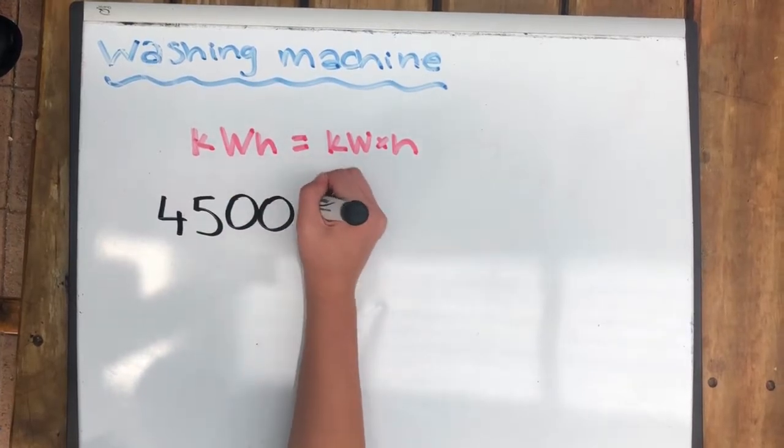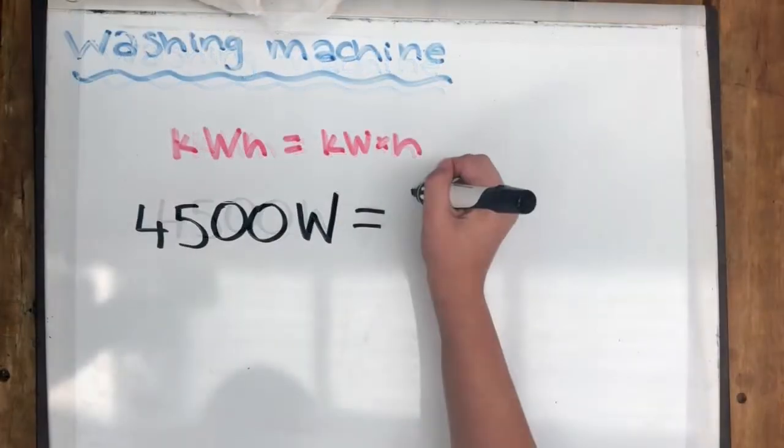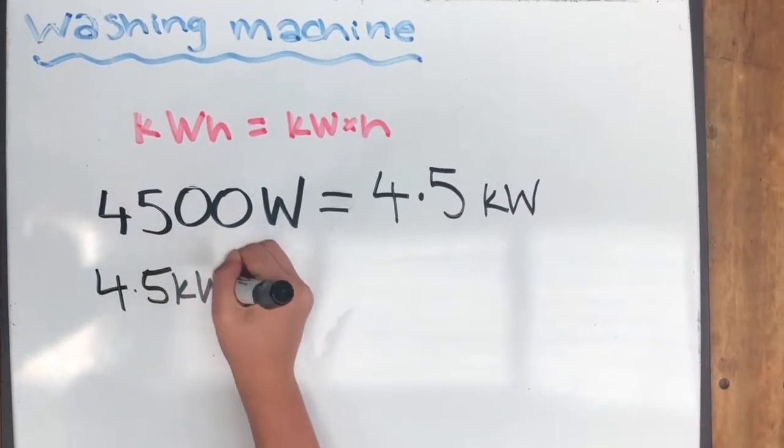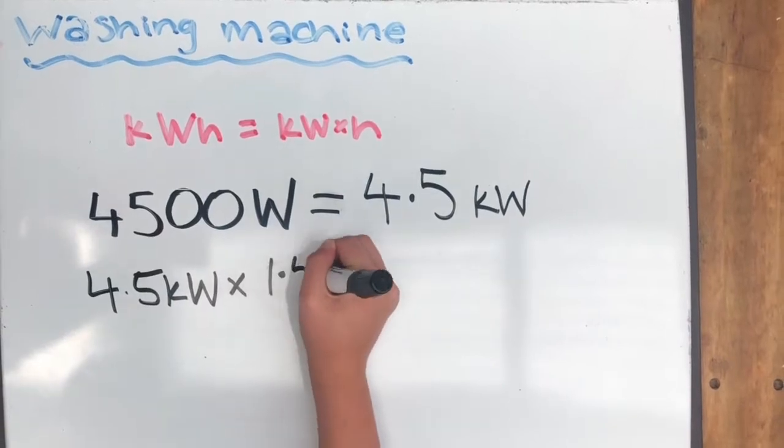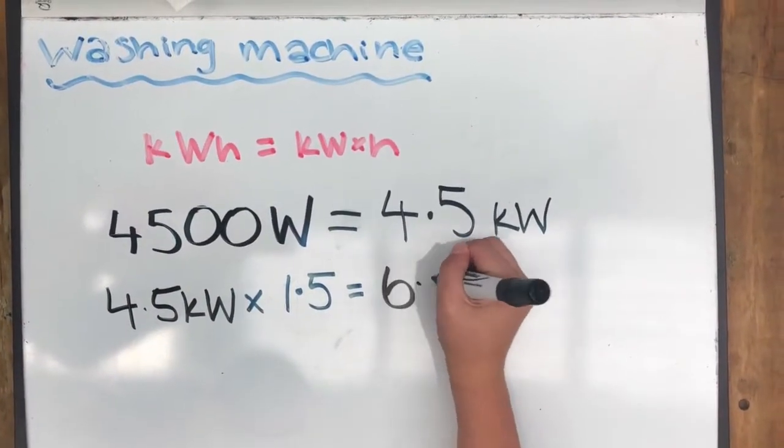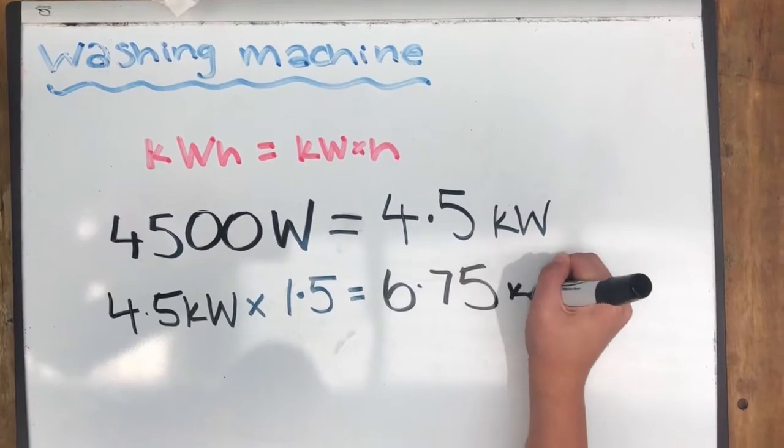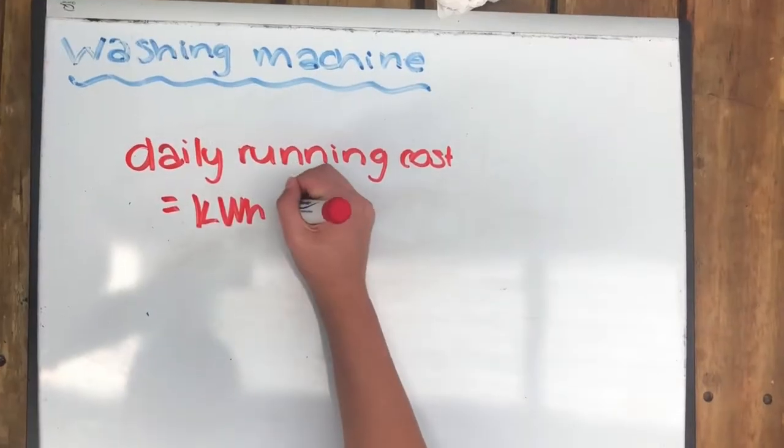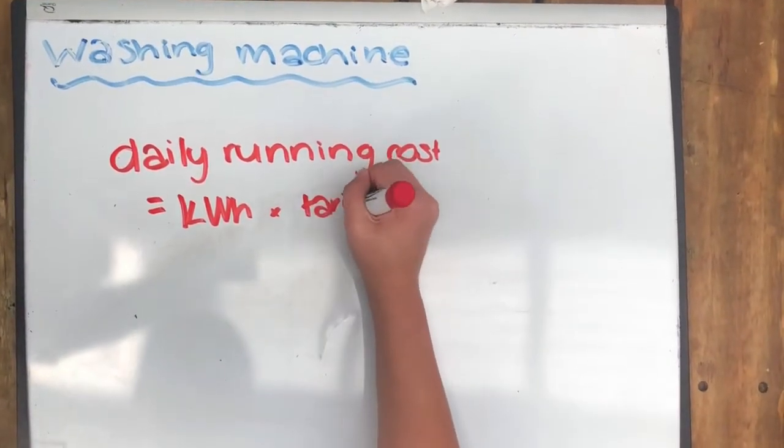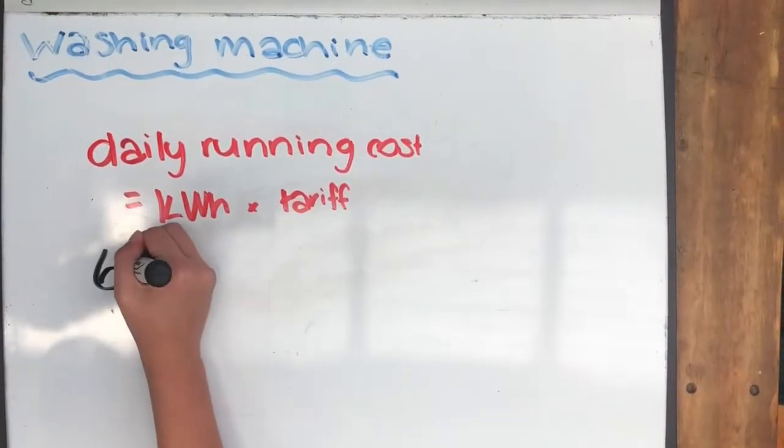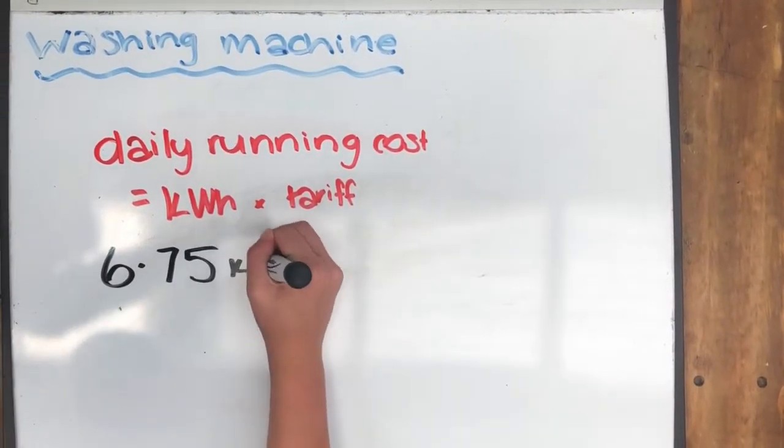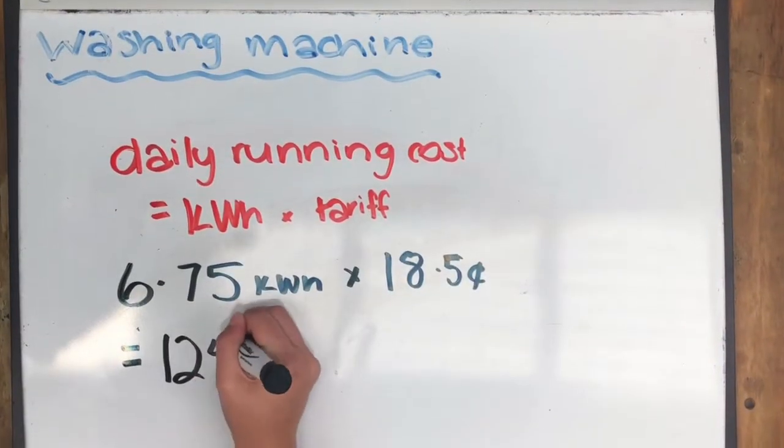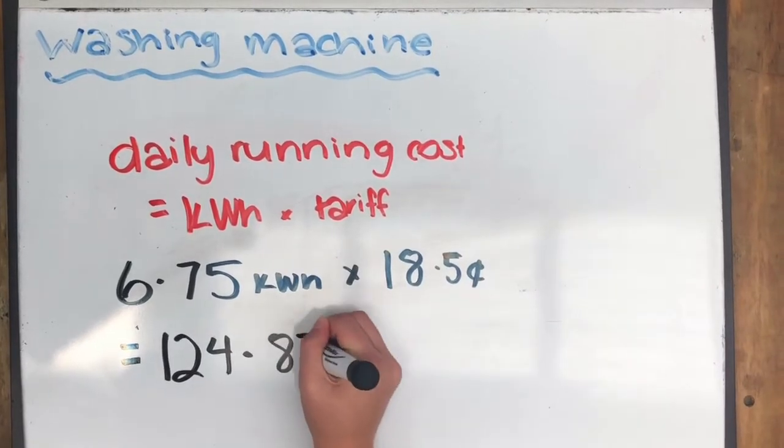4500 watts is equal to 4.5 kilowatts. 4.5 kilowatts times by 1.5 hours equals 6.75 kilowatts used in one wash. The daily running cost is kilowatts times cost per kilowatt. 6.75 kilowatts times 18.5 cents which equals 124.875 or $1.25 per day.